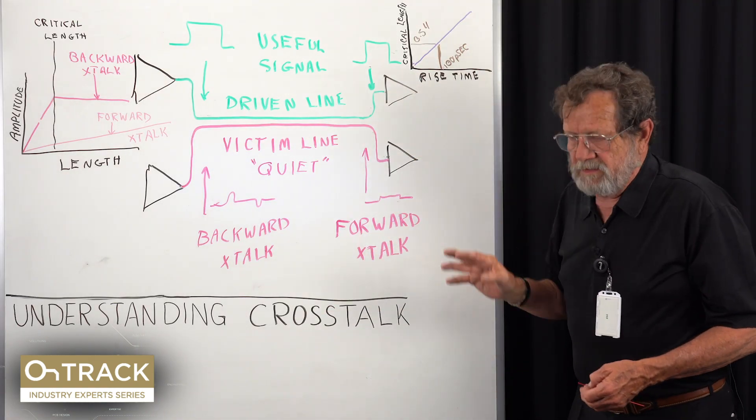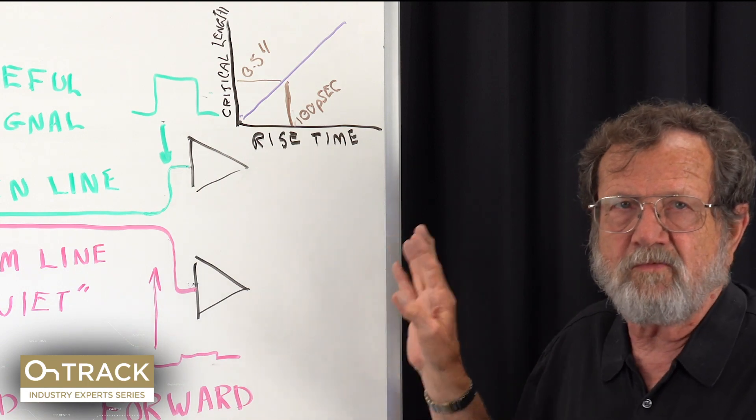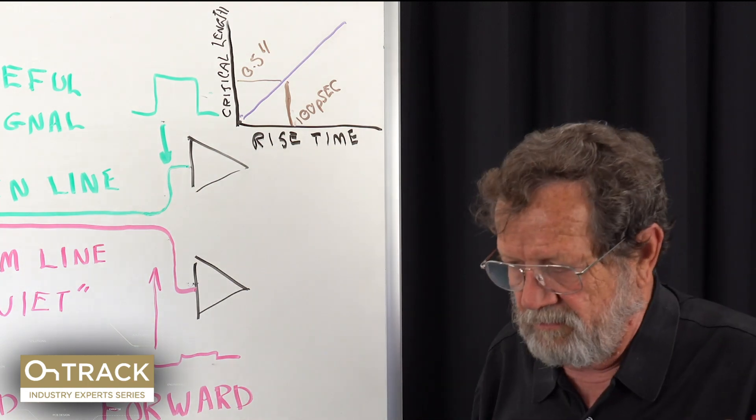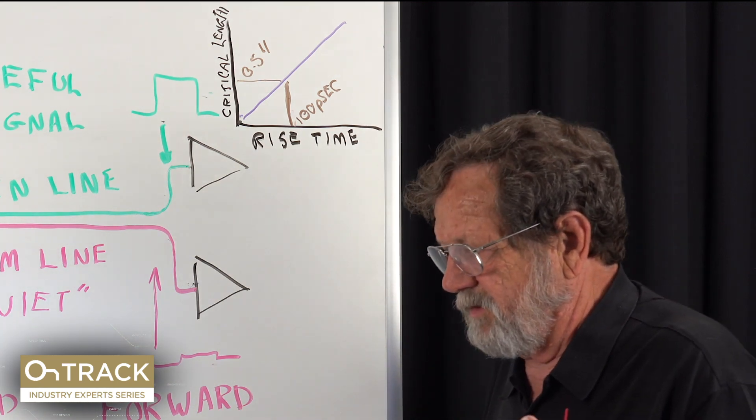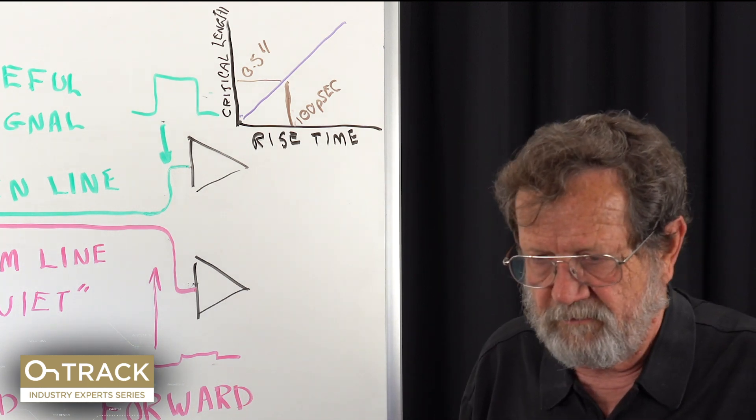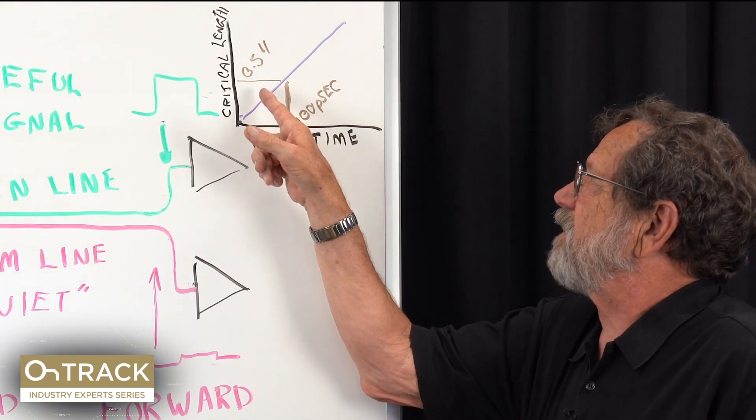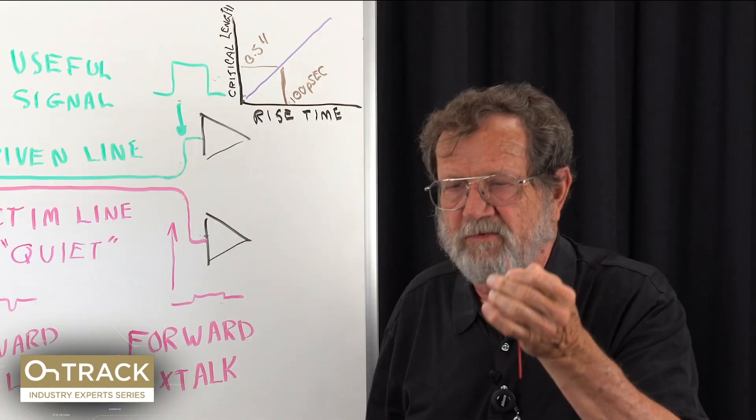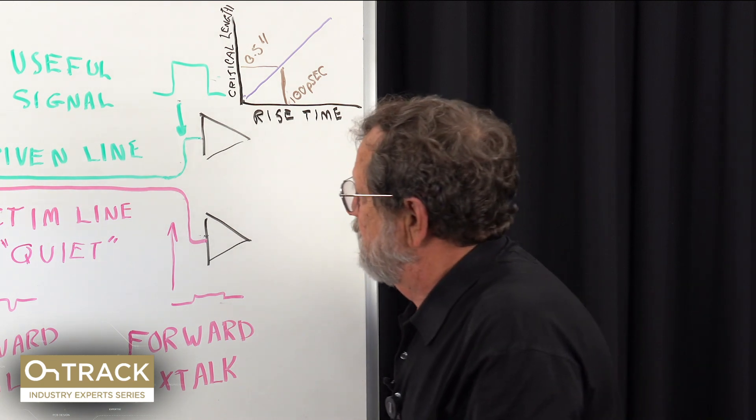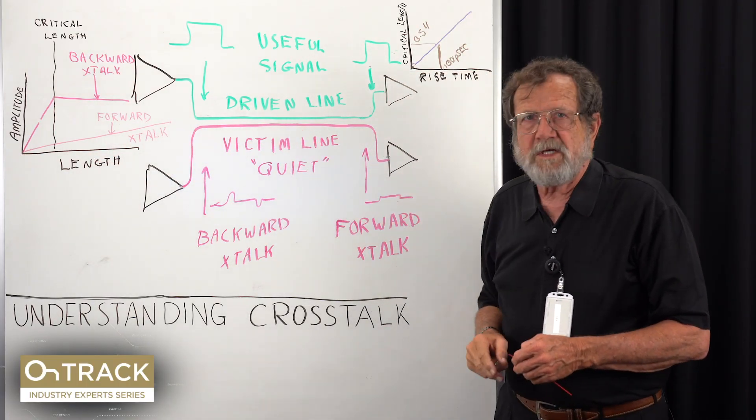This chart over here shows rise time on the horizontal axis and critical length on the vertical. I mentioned in earlier videos that most modern logic has 100 picosecond edges, and we need crosstalk rules that allow us to succeed with that kind of rise time. If you look at 100 picosecond edge, we hit critical length at half an inch. How many boards will we route if that's as long as we can run side by side? Fairly close to none. So controlling backward crosstalk by restricting length of parallel run is not going to work.